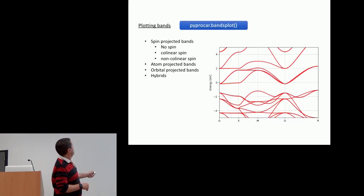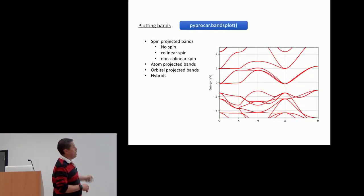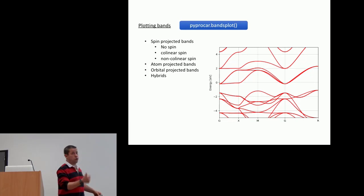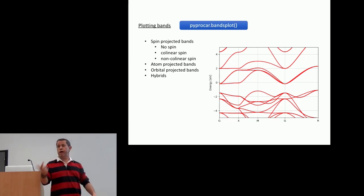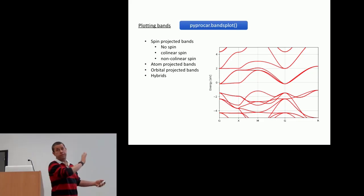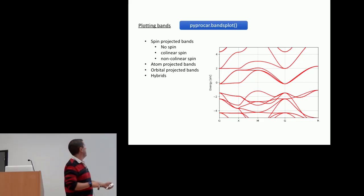You can do a lot of things once you have access to that file. You can plot the band structure with respect to spin, with respect to the atom, with respect to the orbital that you want to study. Anything that you want to do is very easy to implement, and I will show you a few examples of that.